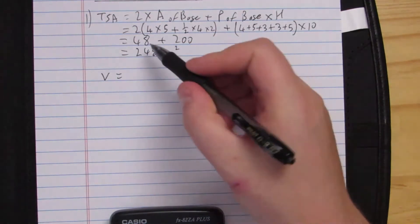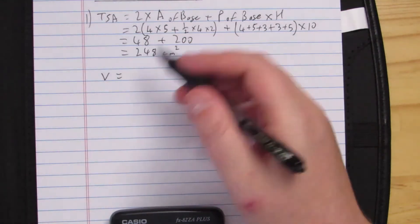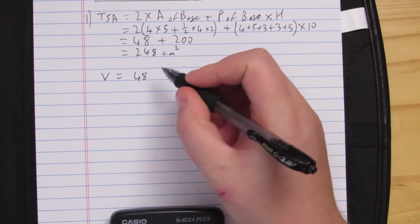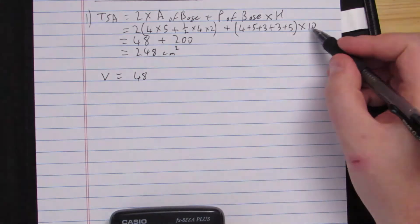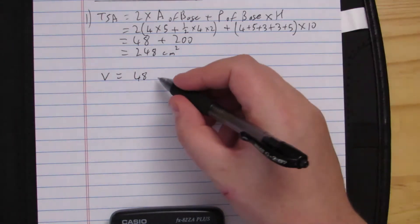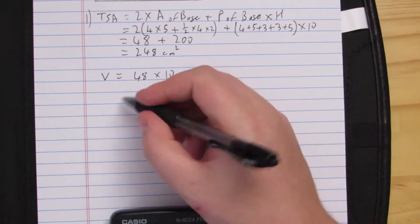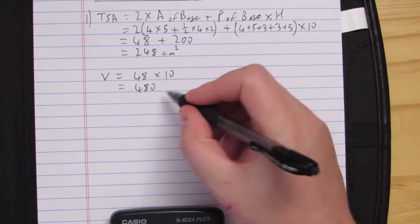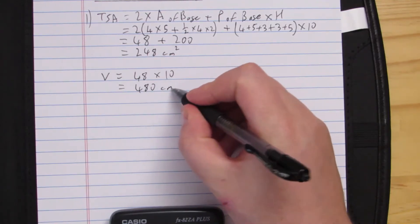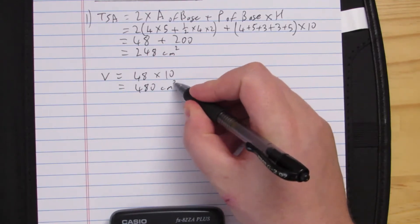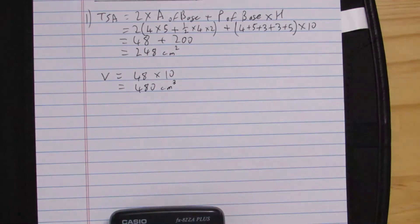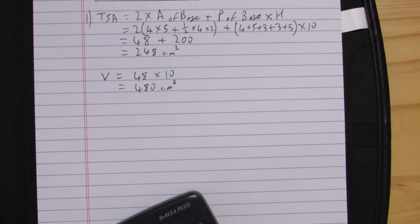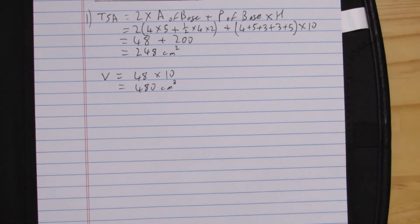My volume is very straightforward. I've already got the area of my base as forty-eight, and I've got the height. So area of base times height gives me four hundred and eighty centimeters cubed. Nice and straightforward.